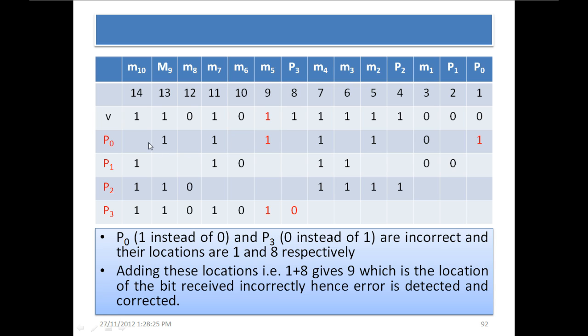When we calculate the parity bit P0, we find that this bit is 1 instead of 0. It was supposed to be 0, but when we calculate it because this M5 is received incorrect, this parity bit is calculated as 1 instead of 0.